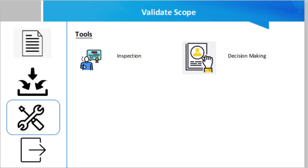The tools for this process: the first tool is inspection. Inspection is the process of examining the work product to determine if it adheres to the documented standards. The results of an examination generally include measurements and may be conducted at any level. Inspections are sometimes also called reviews, product reviews, audits, and walkthroughs.